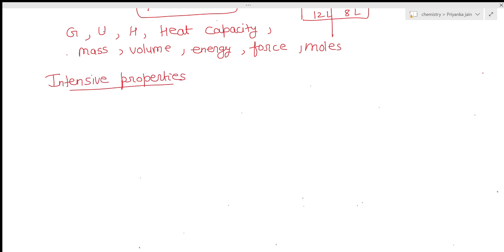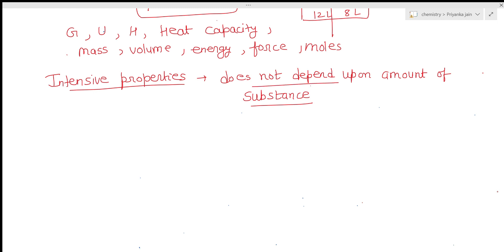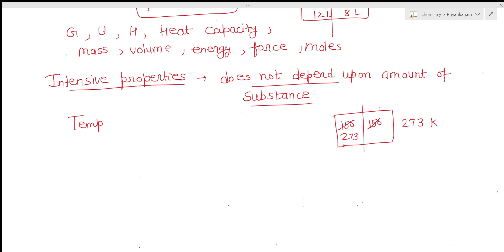Intensive properties are properties that do not depend upon the amount of substance in the system. For example, temperature — if a system is at 273 K and you divide it, you cannot say each part will be at 150 K. Both parts will remain at 273 K. No matter how much you divide, temperature remains fixed. So temperature is an intensive property, like pressure, density, viscosity, refractive index, and surface tension.